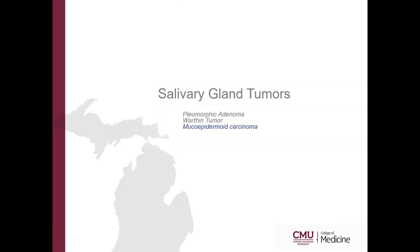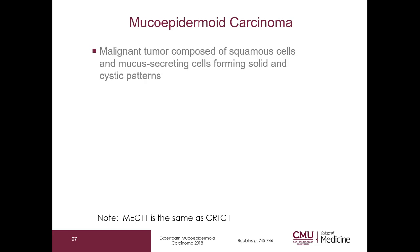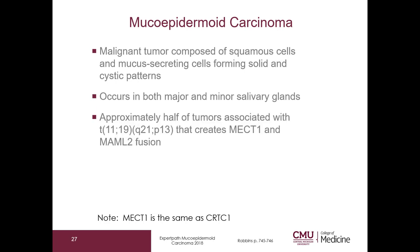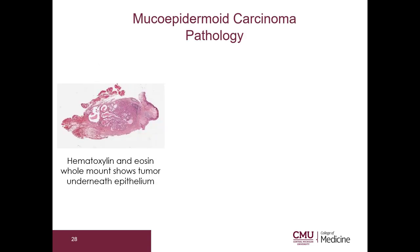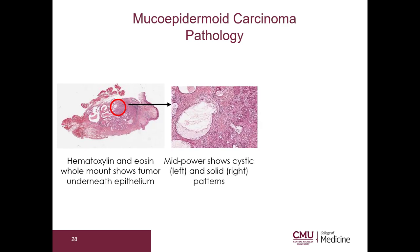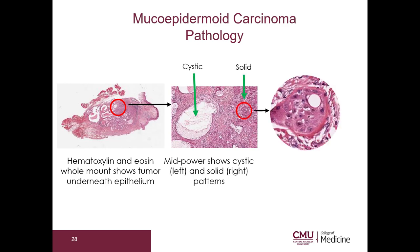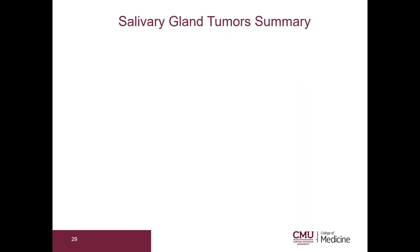Let's go on to mucoepidermoid carcinoma. This is a malignant tumor composed of squamous cells and mucus-secreting cells forming solid and cystic patterns. It occurs in both major and minor salivary glands. Approximately half of these tumors are associated with an 11-19 translocation which creates a MECT1-MAML2 fusion. The prognosis depends on the histologic grade. This would be a good point to stop the video and attempt to write down everything you have just learned about the three salivary gland tumors.